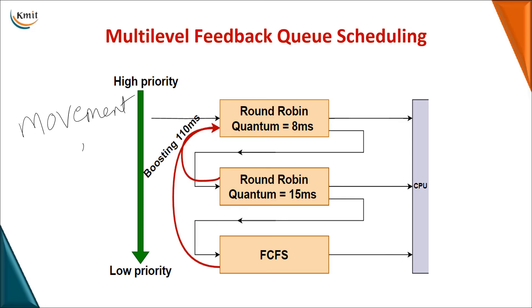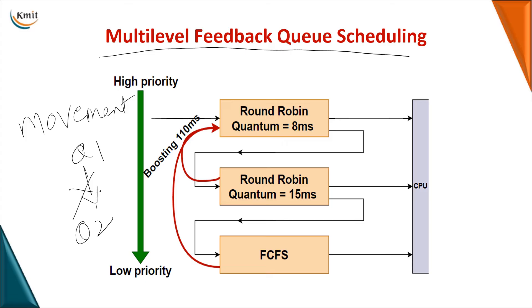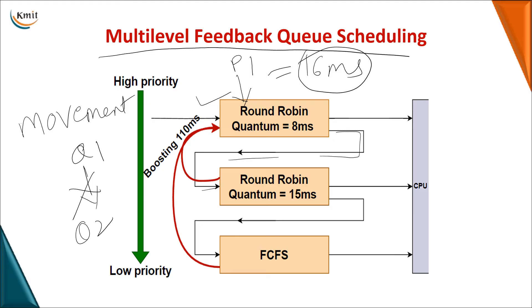In multi-level queue scheduling, a process present in one queue cannot be moved to any other queue. In multi-level feedback queue scheduling, a process can be moved from one queue to another. For example, with three queues where queue 1 uses round robin with a time quantum of 8ms, if process P1 requires 16 milliseconds and cannot complete within 8, it is moved down to a lower queue after the quantum expires.